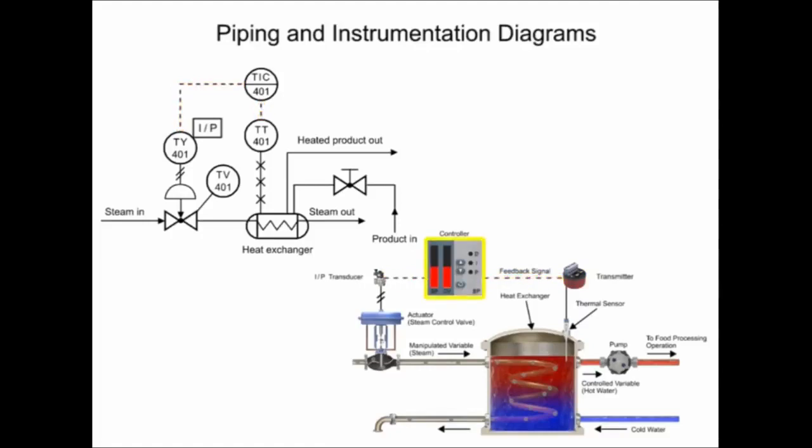The controller and indicator is the instrument where the transmitter sends an electrical signal and is shown in the functional identifier at the second and third letters, I and C. Balloons with a solid dividing line indicates that the instrument is board mounted.